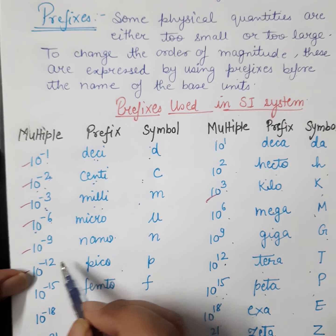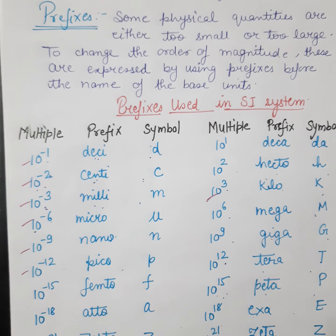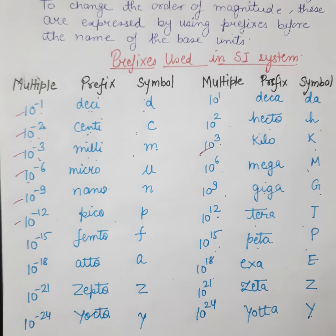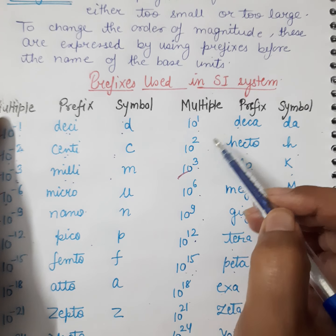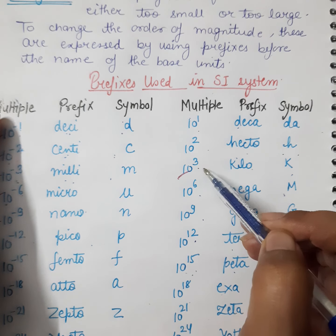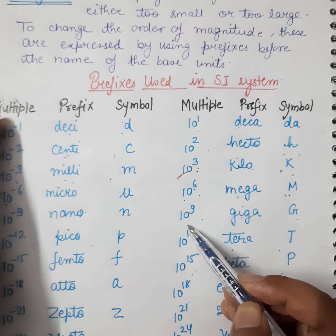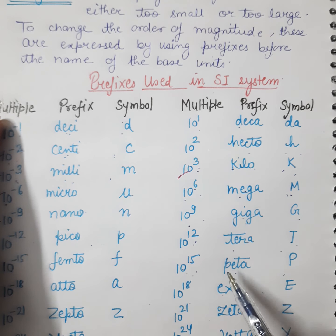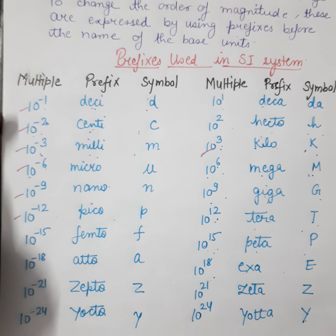Continuing the prefix table: 10⁻¹² is pico (p), 10⁻¹⁵ is femto, 10⁻¹⁸ is atto, 10⁻²¹ is zepto, and 10⁻²⁴ is yocto. For larger values: 10¹ is deca, 10² is hecto (h), 10³ is kilo (K), 10⁶ is mega (M), 10⁹ is giga (G), 10¹² is tera (T), 10¹⁵ is peta (P), 10¹⁸ is exa (E), 10²¹ is zetta (Z), 10²⁴ is yotta (Y).